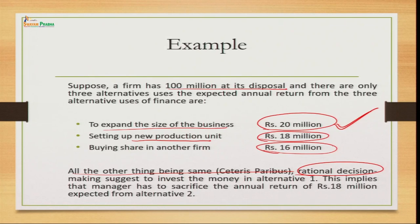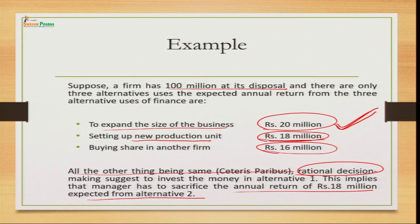That implies the manager has to sacrifice the annual return of 18 million expected from alternative 2. Since we chose the first alternative giving 20 million, we sacrifice the second alternative — setting up a new production unit with an expected return of 18 million. This 18 million becomes our opportunity cost.